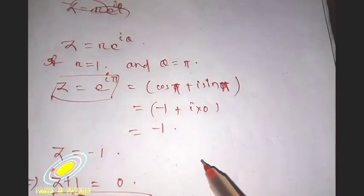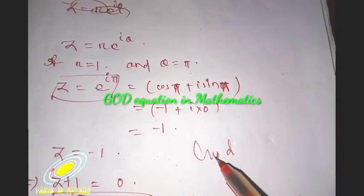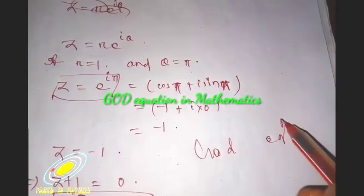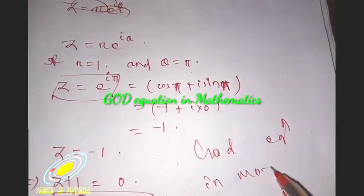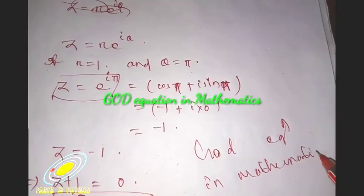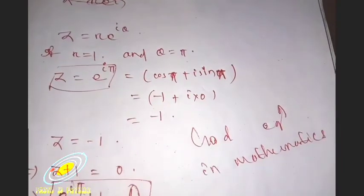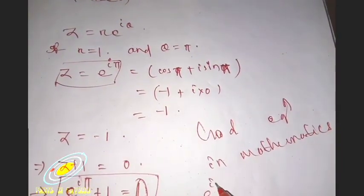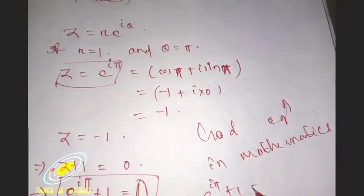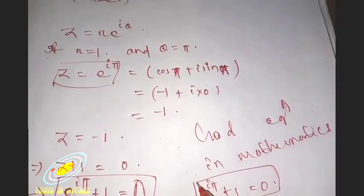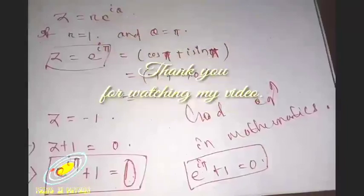...the god equation in mathematics. It means it is a very important equation: e to the i pi plus 1 equals 0. Thank you for watching my video.